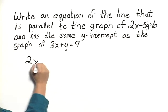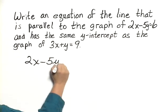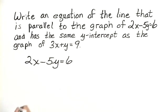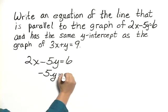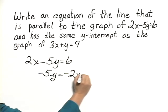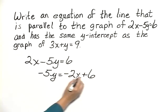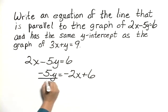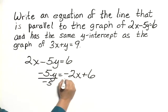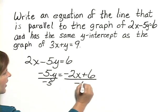We have 2x minus 5y equals 6 and we want to solve for y, so we subtract 2x from both sides. We have negative 5y equals negative 2x plus 6. And then we divide everything by negative 5.